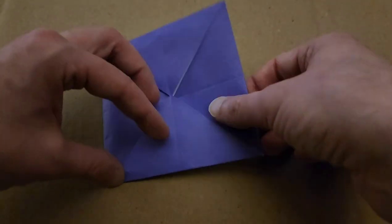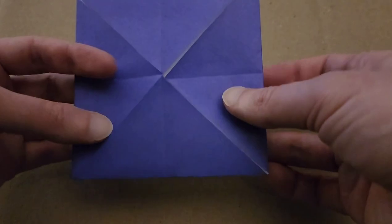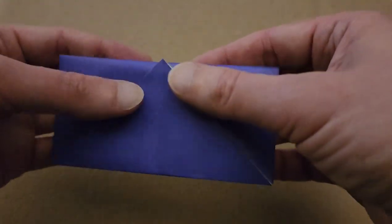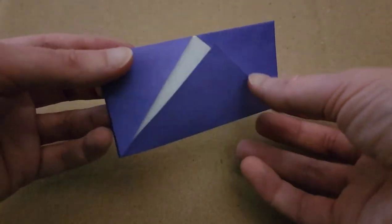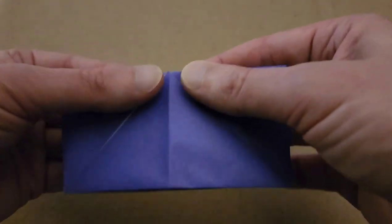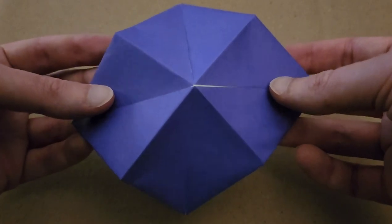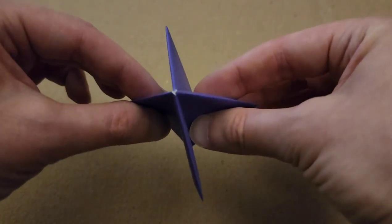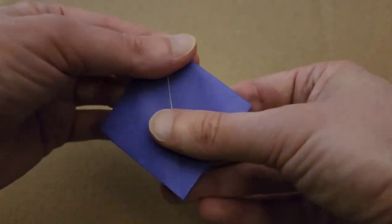Okie dokie. So from here, what we need to do is reinforce some folds. So going to fold our piece in half along this center fold. And then open it up and then fold it the opposite way. And then we're going to sort of pinch and close our piece. So pinch and close along those creases and lay our piece flat.